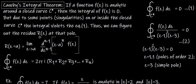Thus we can figure out the residue R(z) at that pole. A pole is another name for a singularity. The residue at the pole can be represented as R(z) at z=a, equals the limit as z tends to a of the (n-1)th derivative of (z−a)^n · f(z).